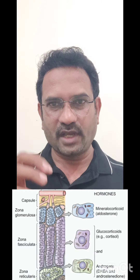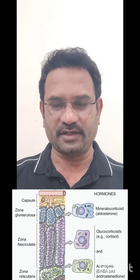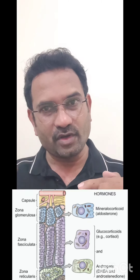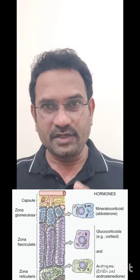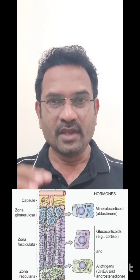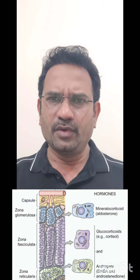So that is zona glomerulosa releasing aldosterone, the mineralocorticoid. The second zone is zona fasciculata. The hormones released from this zone are glucocorticoids. The natural glucocorticoid is cortisol. These hormones are released from the cortex and control glucose metabolism.